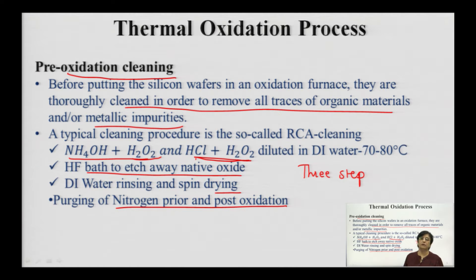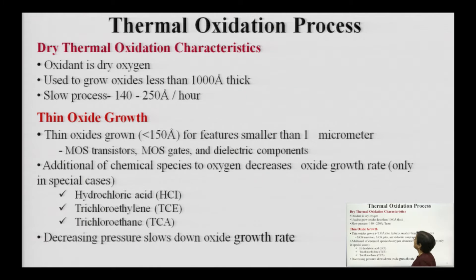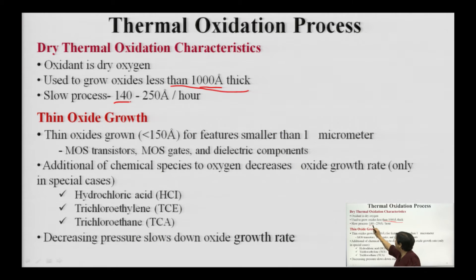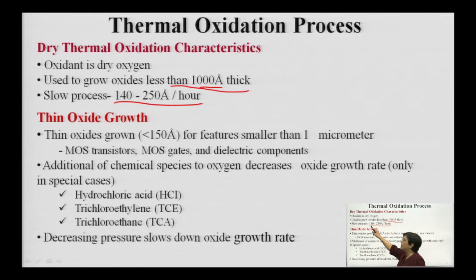After cleaning, nitrogen is purged prior to and post oxidation. Nitrogen is important because it controls the rate at which oxidation happens and acts as a very good controlling agent in the oxidation process. Now, for dry oxidation, the oxide is grown when the thickness required is less than 1000 angstroms. It is a slow process with a growth rate of approximately 140 to 250 angstroms per hour — making it very suitable for thin oxide layer growth.